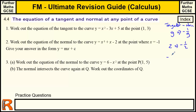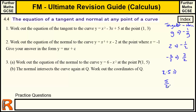If the tangent was minus 2 thirds, then the normal is — we just change the sign, which makes it a plus, and if it's a fraction, we turn the fraction upside down, so it becomes 3 over 2. If we were given it as a decimal, say 2.5, we'd have to do minus 1 over 2.5. It's easier to change that to a fraction: 2.5 is 5 halves, so the gradient of the normal would be minus 2 over 5.